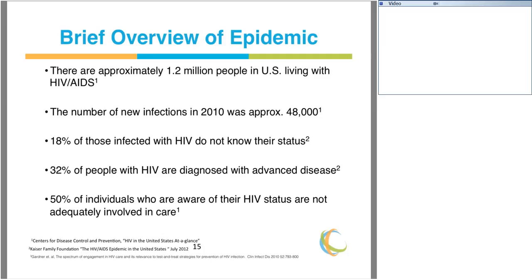There are about 1.2 million people living in the United States currently with HIV AIDS. The number of new infections in 2010 was approximately 48,000. Eighteen percent of those infected with HIV do not know their status, and it's estimated that about 32% of people with HIV are diagnosed with advanced disease, including an opportunistic infection or AIDS-related complication. Fifty percent of individuals who are aware of their HIV status are not adequately involved in care — referring to the HIV care cascade published in 2010 by Gardner.